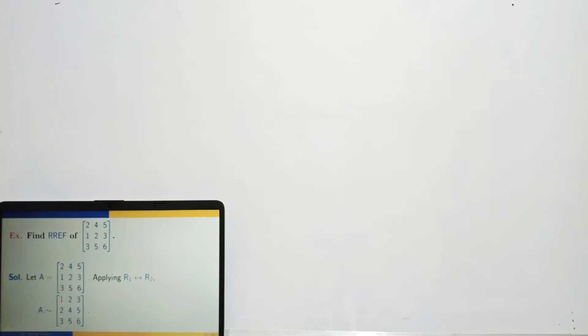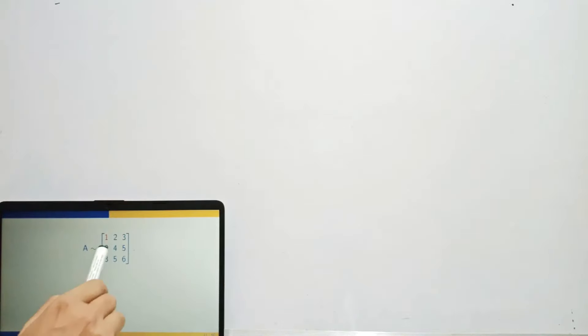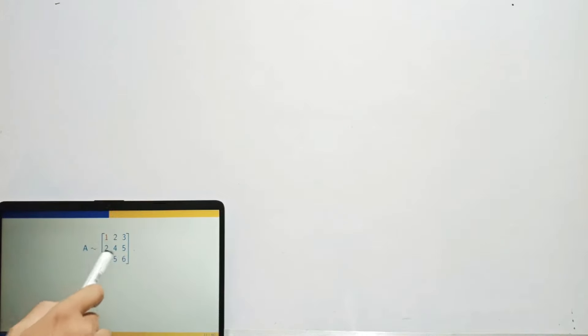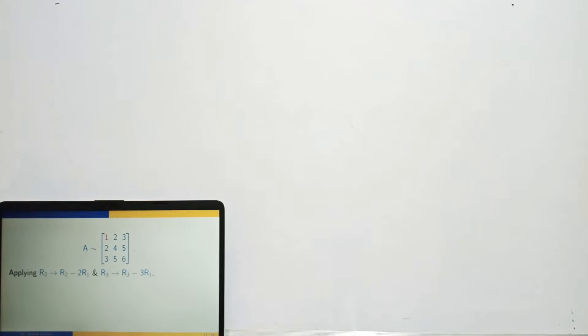Next, make zeros below the pivot entry. Apply R2 replaced by R2 minus 2R1, and R3 replaced by R3 minus 3R1. This gives zeros in the first column below the pivot. Check the output — zeros are now made here.